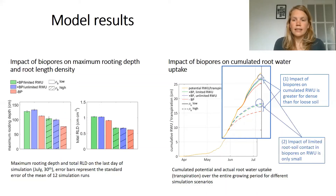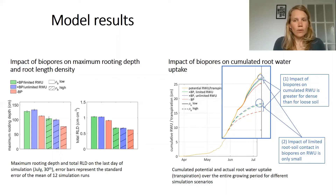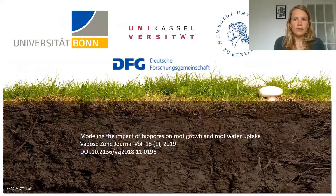Secondly, the impact of limited root-soil contact in biopores on root water uptake is only small. This is because the root hydraulic conductivity was not the limiting factor, but rather the limited soil water availability. These results are interesting in general but can also be very useful for larger scale simulations in 1D crop models that can only take into account the impact of biopores on root growth and root water uptake implicitly. If you are further interested in this study I would invite you to read the paper, and thanks a lot for watching.